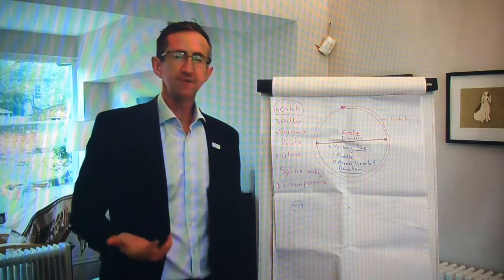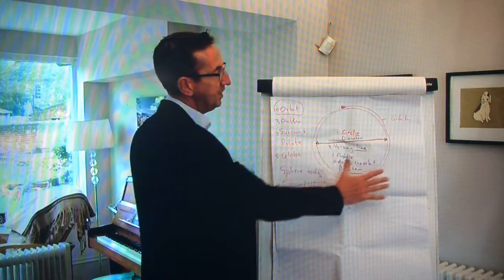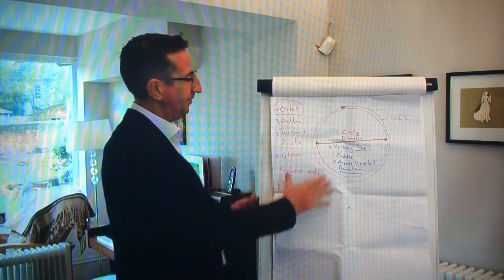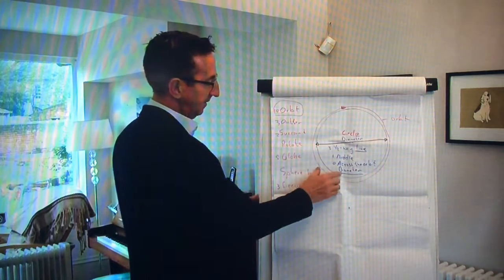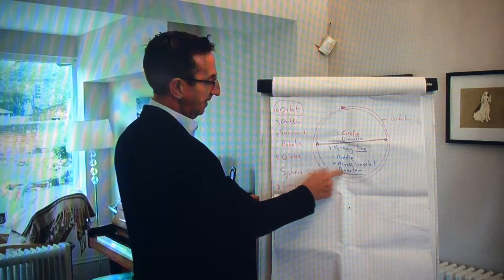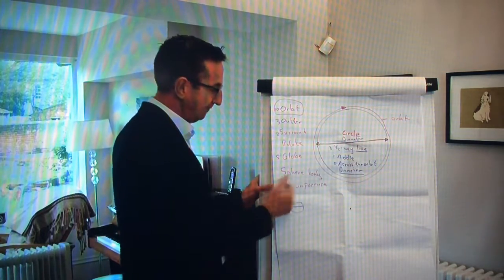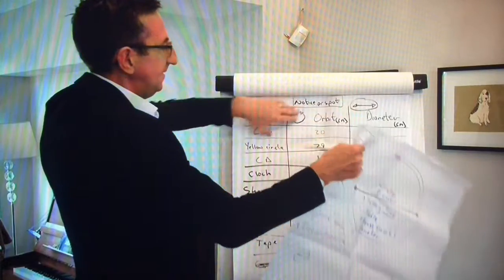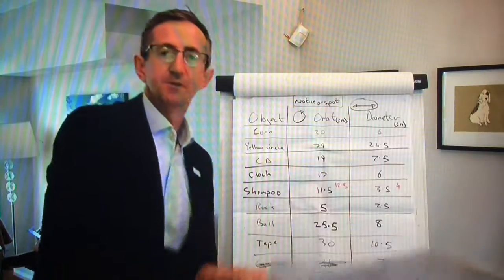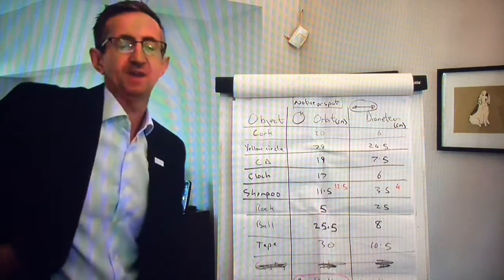Whichever version of the lesson it is, they follow a similar pattern — this idea of developing the emerging language. So you can see what happened here: they voted on 'orbit.' For the diameter, some wanted to call it the diameter, but 10 voted for 'orbit.' This is where the lesson gets interesting, because we're dealing with real numbers — everything emerges from measurements that are messy.